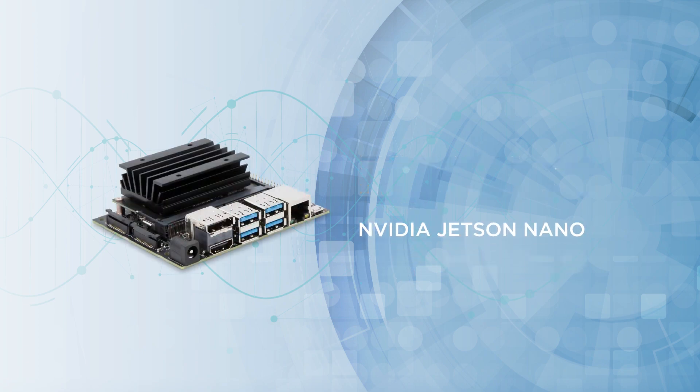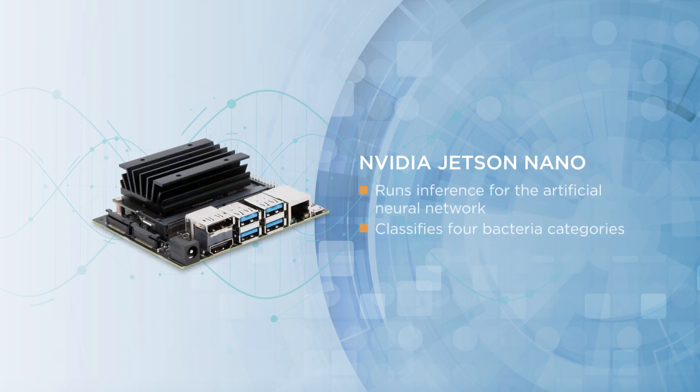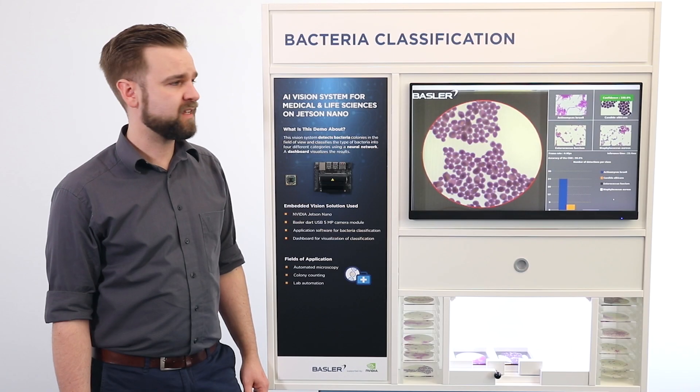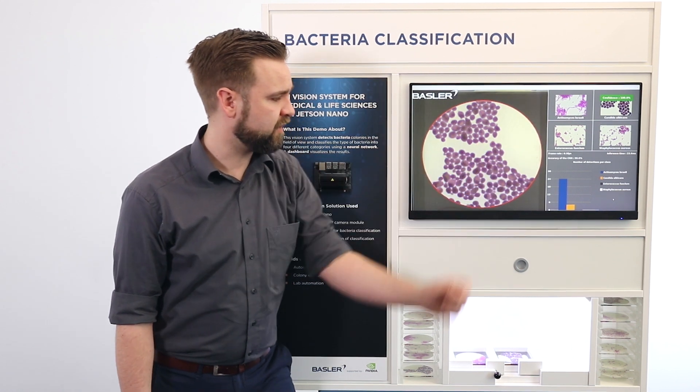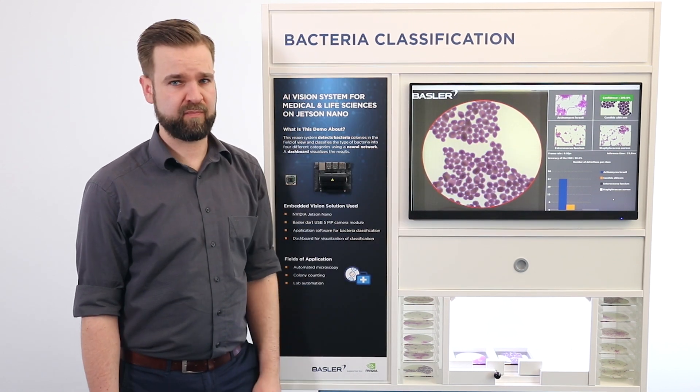The Nvidia Jetson TX2 runs the inference for the artificial neural network, which was trained with quite a large set of labeled images to classify four different categories of bacteria.